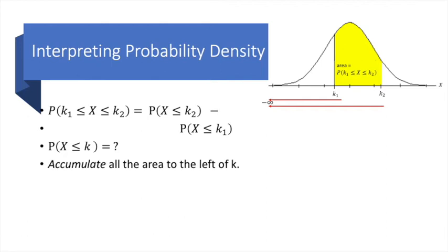Well, we simply have to accumulate all the area and hence all the probability to the left of k. Now, can you remind me what function in probability theory accumulates the probabilities up to any given point? Think about it. I hope you figured it out, and yes, it is called a cumulative distribution function or CDF.